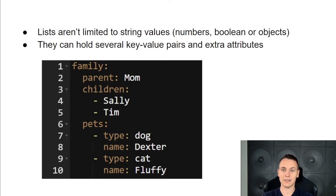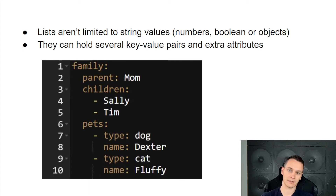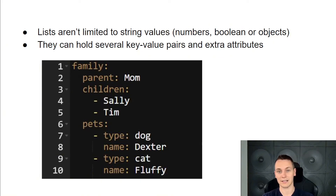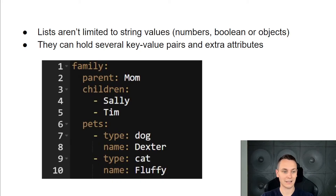Lists aren't limited to just string values — they can hold numbers, nulls, booleans, or even more complex objects. Here we have added a child element of 'pet' that holds multiple attributes: a type and a name. When a list element is more complex and has several attributes like this one, the hyphen will always indicate the start of that element in the list.